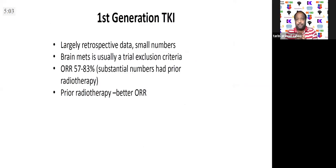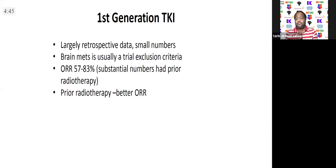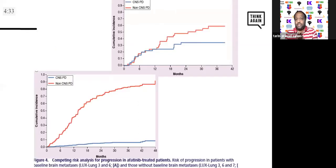First-generation TKI data is largely retrospective with small numbers. Brain mets were actually an exclusion criterion in some trials. Response rates vary from as low as 50 percent to as high as 80 to 85 percent. Most patients had prior radiotherapy, and radiotherapy does achieve better overall response rates and disease control. Coming to afatinib — LUX-Lung 3, 6, and 7 put together showed comparison of afatinib versus chemotherapy arms for brain mets.